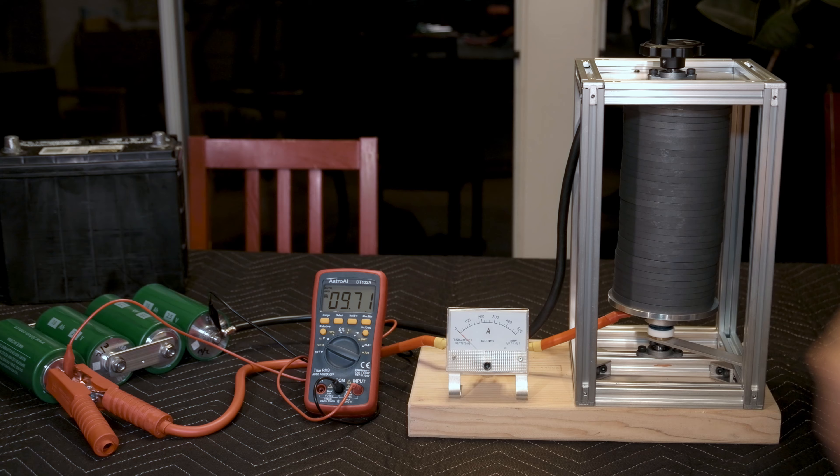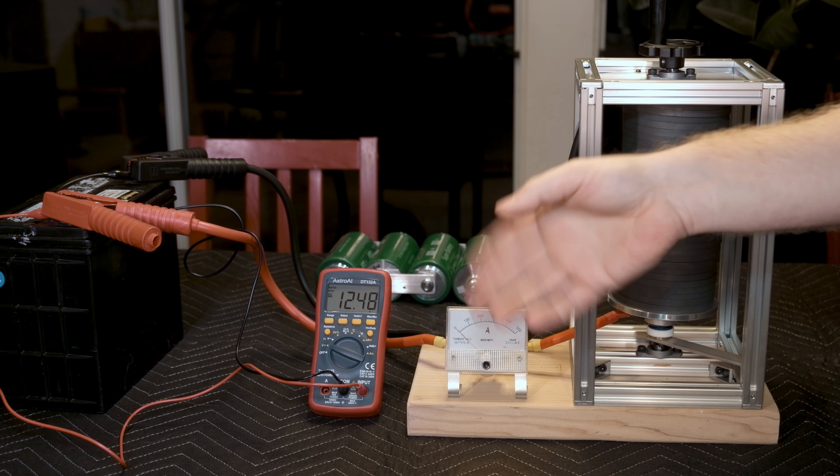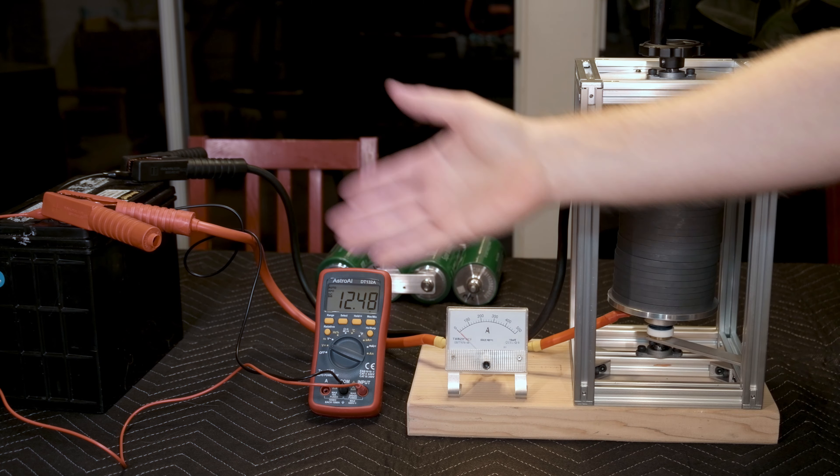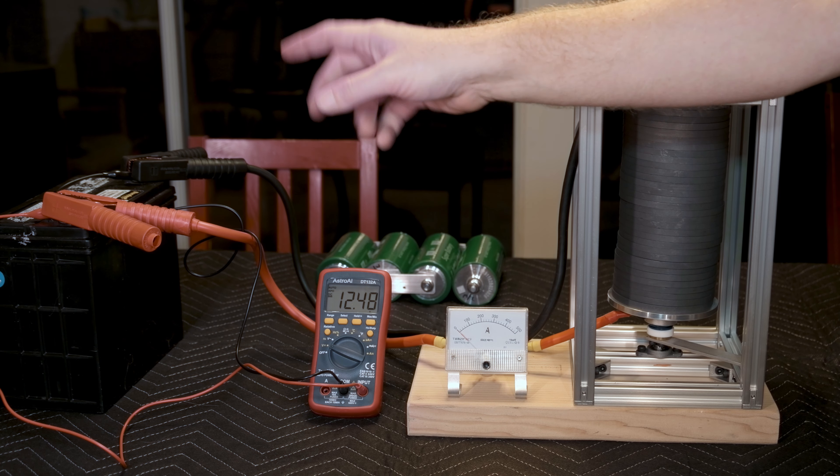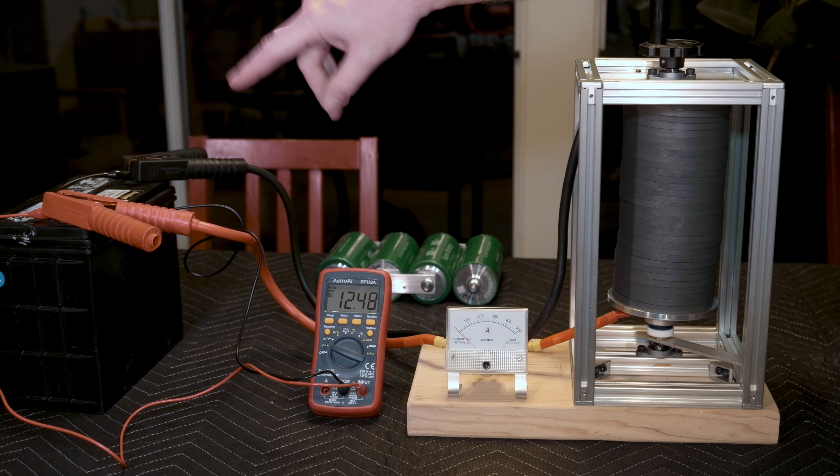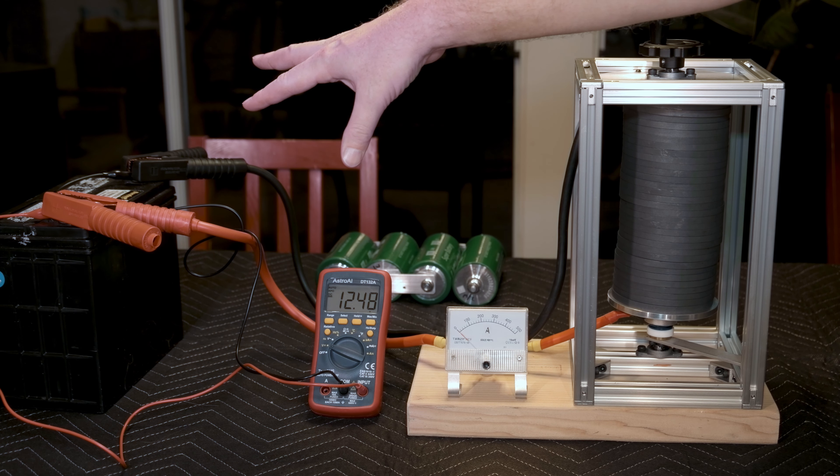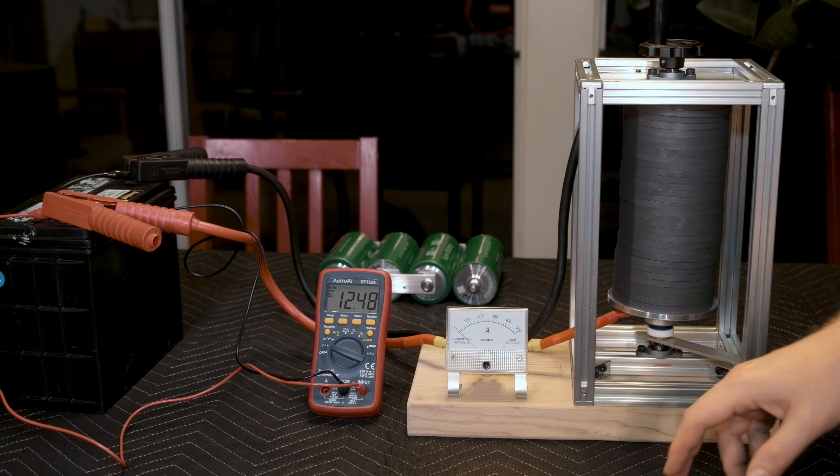So again with the lithium cells, we saw about a volt-ish drop, maybe a little bit more. Let's hook up the lead acid car battery and see what kind of results we get there. I'll be right back. Alright, so here we have what is more or less a recently charged car battery hooked up to the same thing. It took a little bit to get the voltage terminals connected or making contact with the battery terminals themselves as opposed to the clamps.